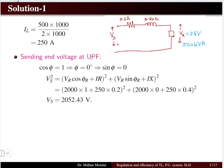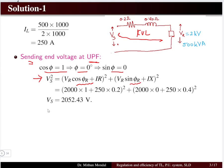Under unity power factor, cos φ = 1, so φ = 0 and sin φ = 0. Using Kirchhoff's voltage law, the sending end voltage squared equals the voltage drop in the resistive part plus the voltage drop in the reactive part. Substituting the known values into this relationship, we obtain the sending end voltage as 2052.43 volts.